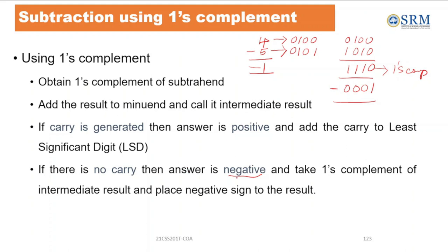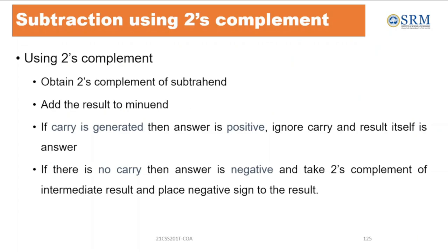In total I have two cases: one positive, one negative. The first example showed a positive result, and the second showed a negative result. Now I will go for two's complement subtraction. Two's complement works almost the same way, but there is a small change in the third step: if the result is positive and carry is generated, we simply ignore the carry. If there is no carry, the result is negative and we take the two's complement of the immediate result and place a negative sign.